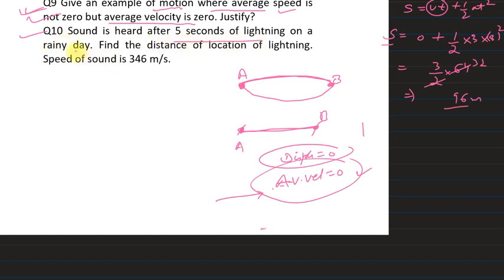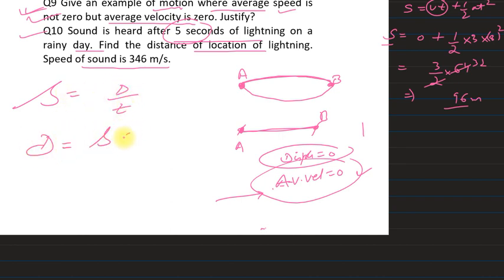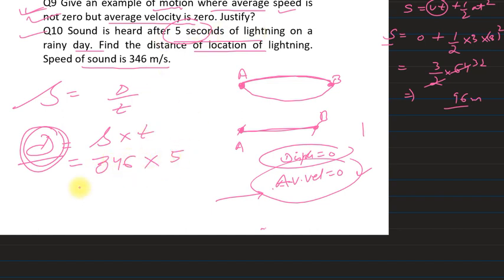Question 10: sound is heard 5 seconds after lightning on a rainy day. Find the distance of the lightning. The speed of sound is 346 m/s and time is 5 seconds. Distance = speed × time = 346 × 5 = 1730 meters. That is the answer for this problem.